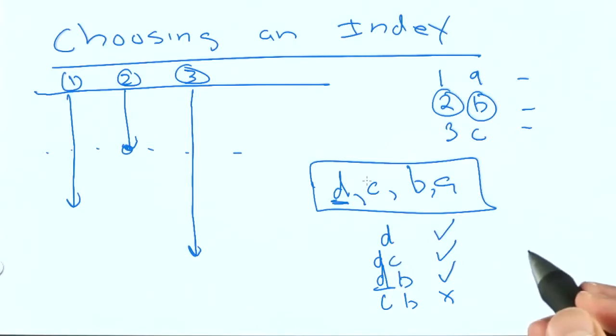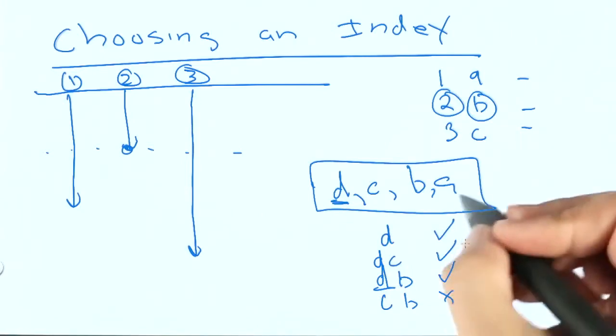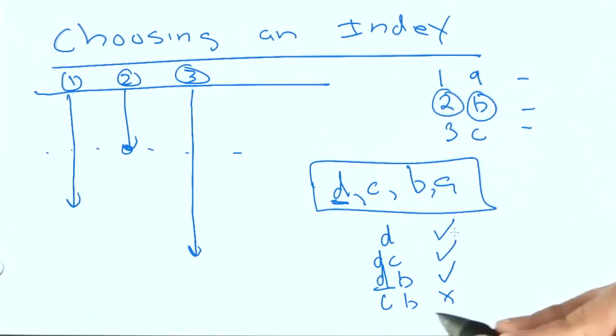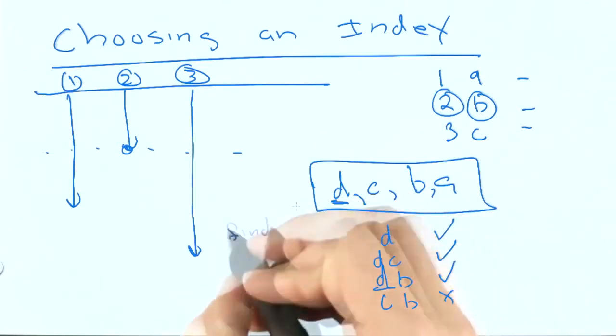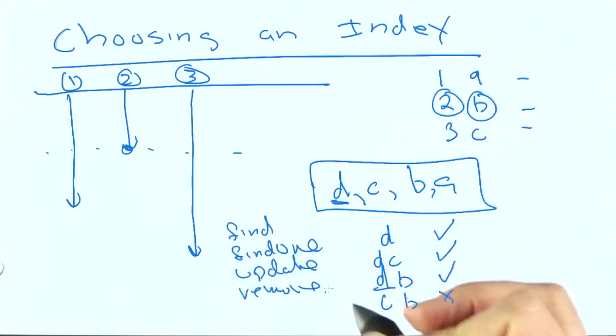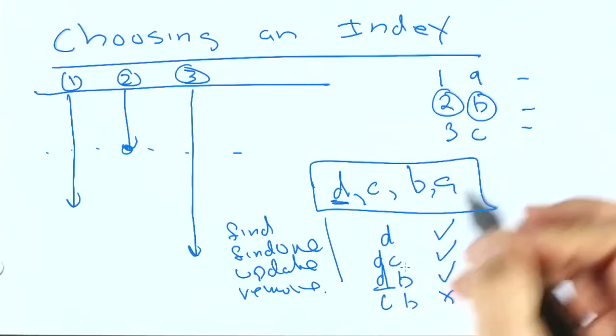And this is true whether or not it's using it to do a sort, or whether it's using it to do a find. And although I didn't say this explicitly, you should realize that find, find1, update, and remove, they all can benefit from indexes.